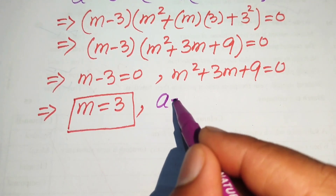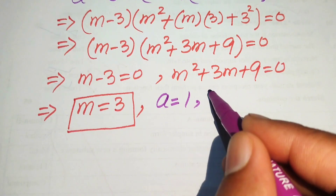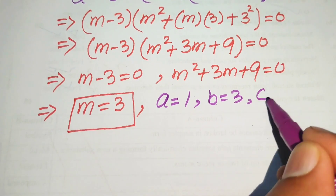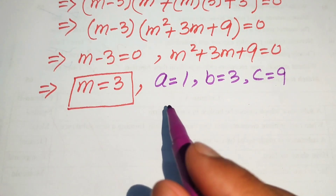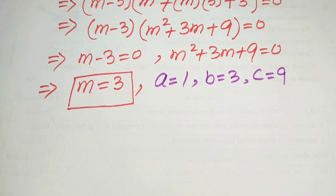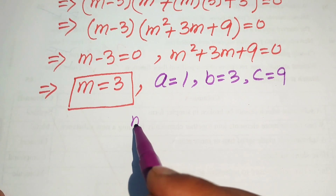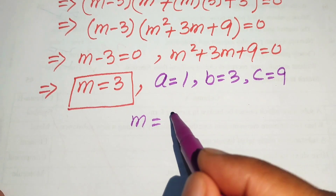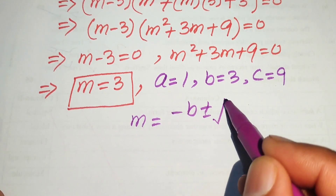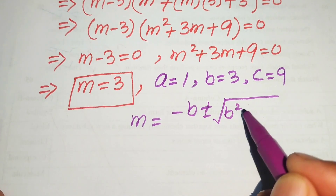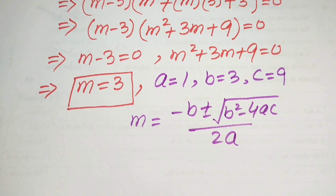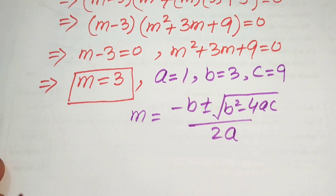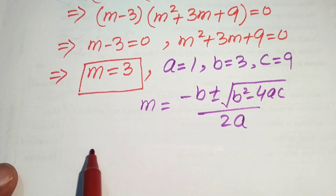Now we need to find the other roots by solving the quadratic equation. The coefficients are a equals 1, b equals 3, and c equals 9. We use the quadratic formula: m equals negative b plus or minus the square root of b squared minus 4ac, divided by 2a.